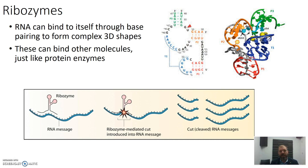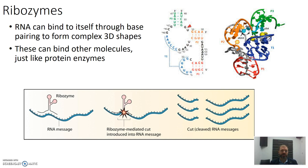Here's a slide looking at ribozymes — that combines the idea of ribonucleic acid, RNA, with an enzyme. RNA can actually bind to itself through base pairing to make complex 3D shapes. Here we see some base pairing happening, some area of non-base pairing, and then it loops around and connects again. RNA molecules are able to make these complex 3D shapes by pairing with themselves, just like a protein where amino acids fold around to make a complex 3D shape. These shapes can bind to and catalyse reactions and bind to other molecules in a specific complementary way. Here's an example of a ribozyme — RNA forming an enzyme-like structure that can work on other RNA molecules to, for instance, cut them.